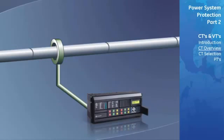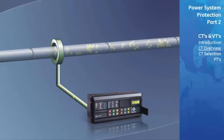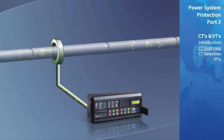The function of a current transformer, or CT, is to take a current flowing through a wire or cable and step it down to a magnitude that a protective relay can measure. A primary characteristic of CTs is their conversion ratio.